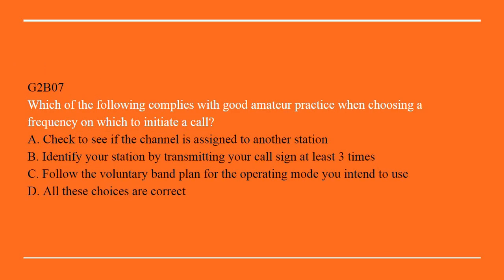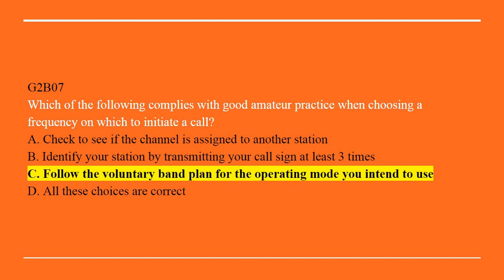G2B07: Which of the following complies with good amateur practice when choosing a frequency on which to initiate a call? A. Check to see if the channel is assigned to another station. B. Identify your station by transmitting your call sign at least 3 times. C. Follow the voluntary band plan for the operating mode you intend to use. Or D. All of these choices are correct. Correct answer is C: Follow the voluntary band plan for the operating mode you intend to use.